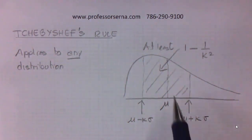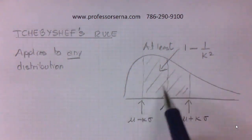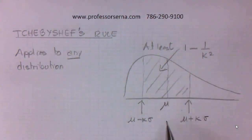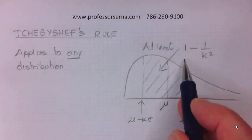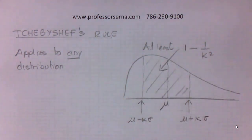And what it tells you is that the area under the graph for the distribution from k standard deviations up and down from the mean is at least 1 minus 1 over k squared.